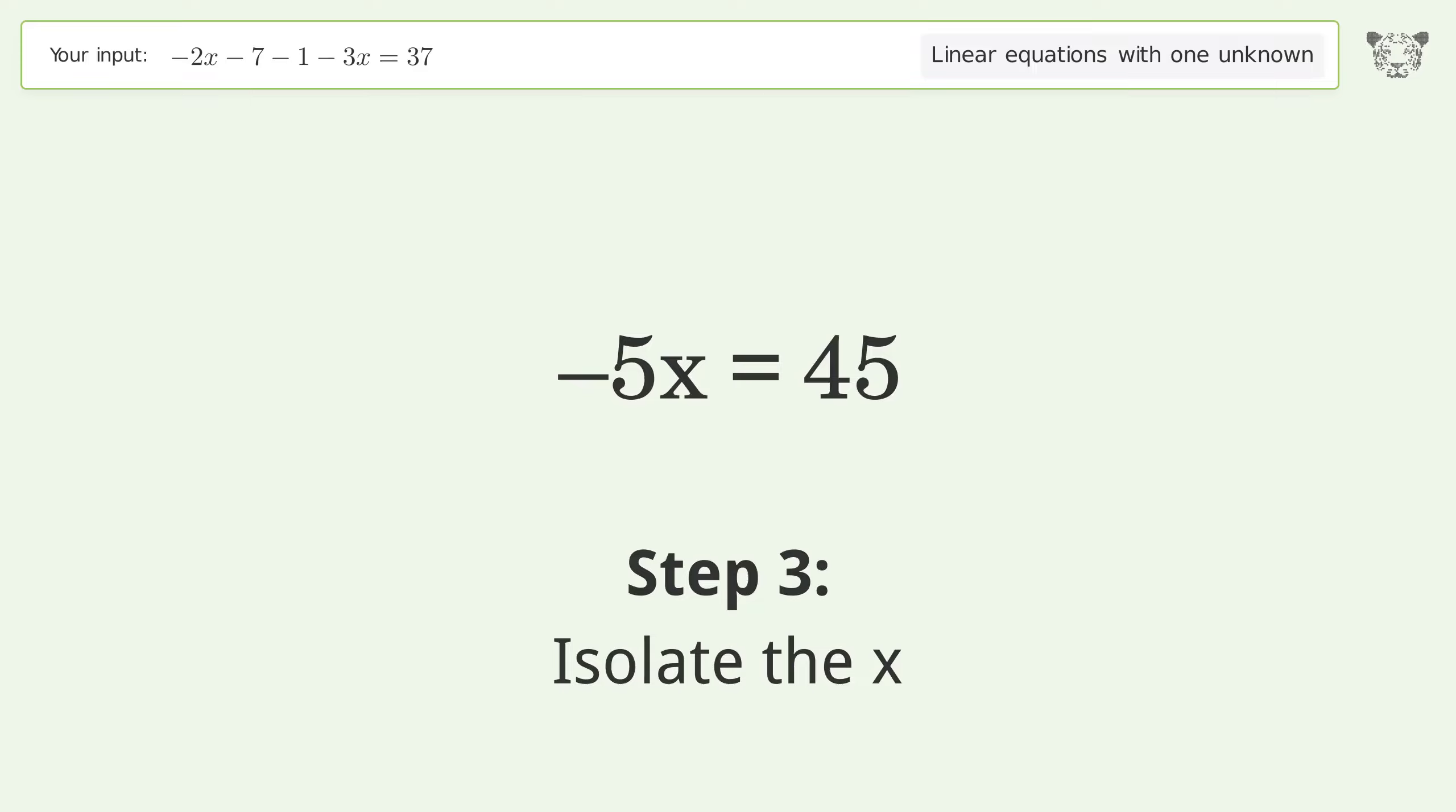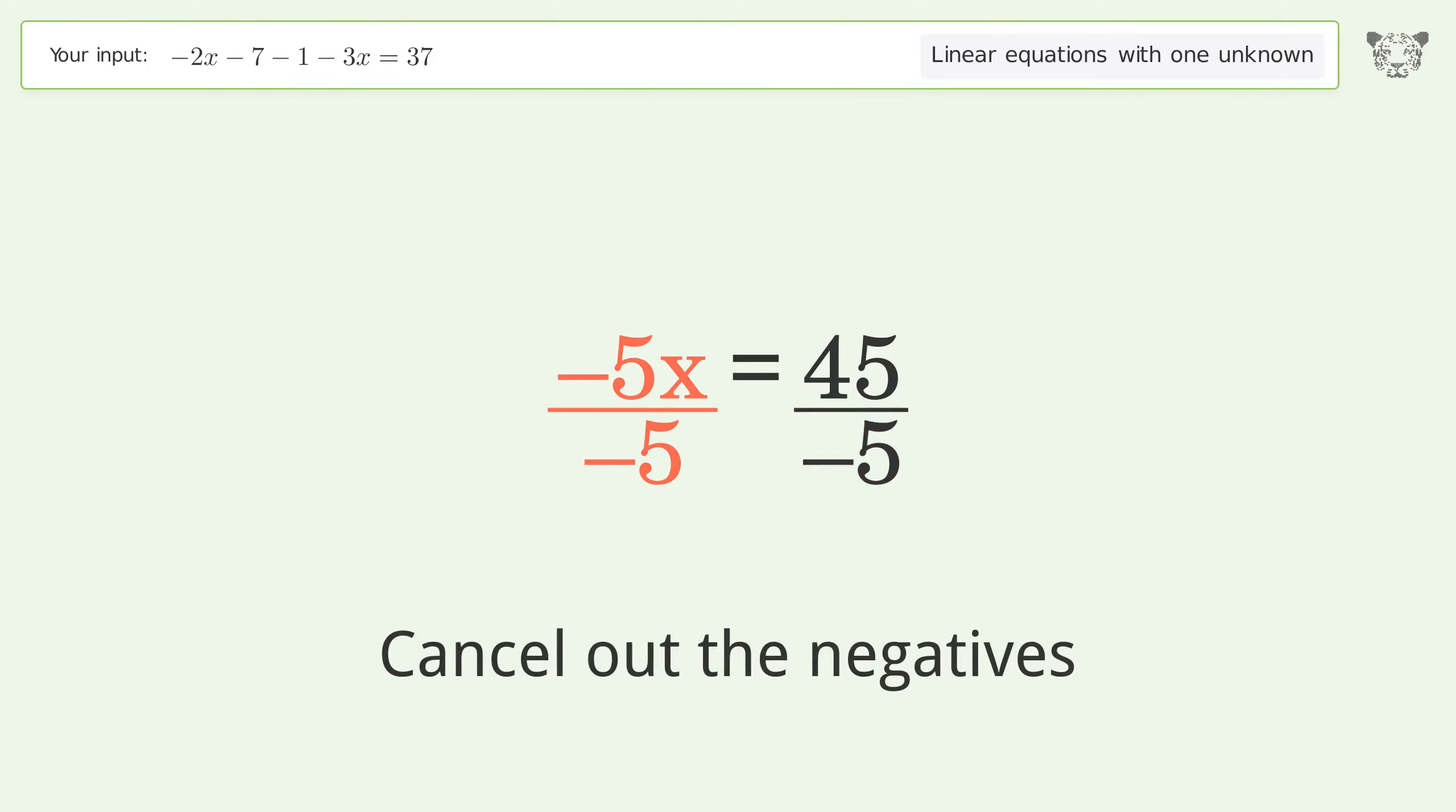Isolate the x. Divide both sides by negative 5. Cancel out the negatives.